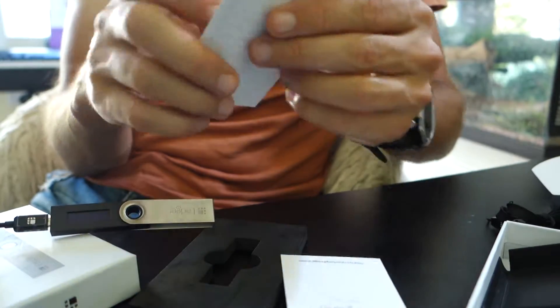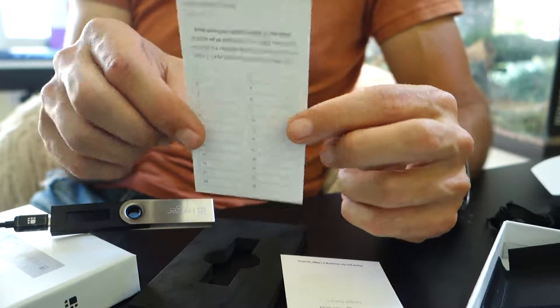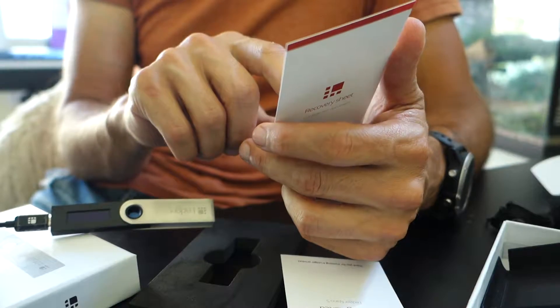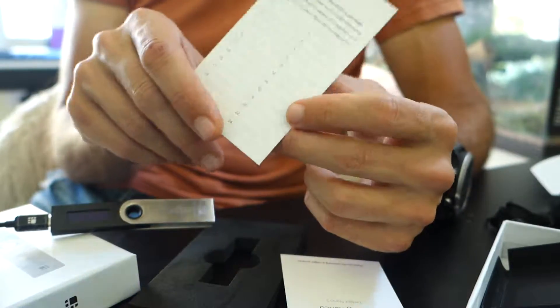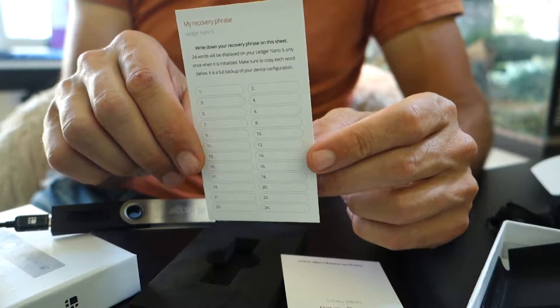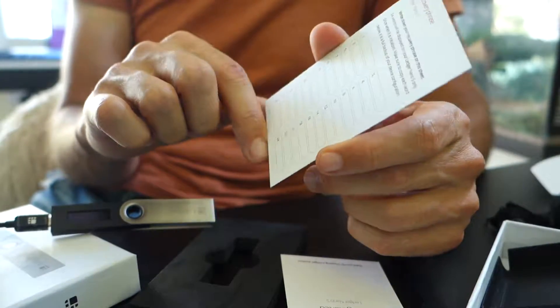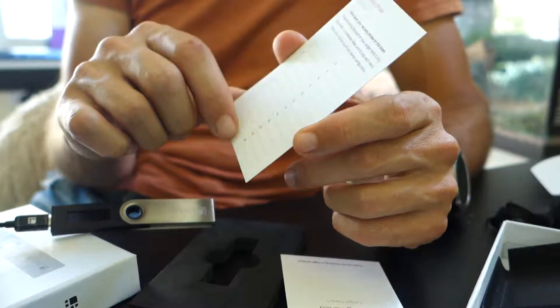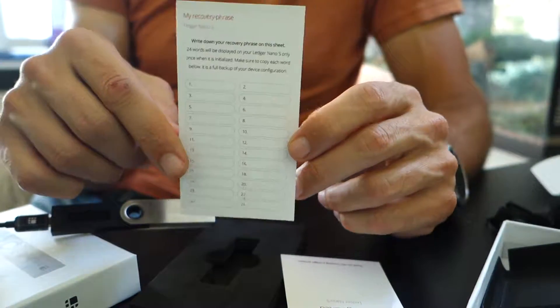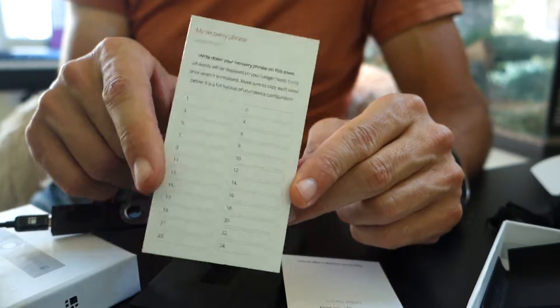And then the other card that they include is an important card for remembering how to recover your password. They have a 24-word recovery mechanism. These are usually referred to as mnemonics. So 24 words, two columns of 12, and they are going to present the mnemonic which will be your holy grail to your private key.